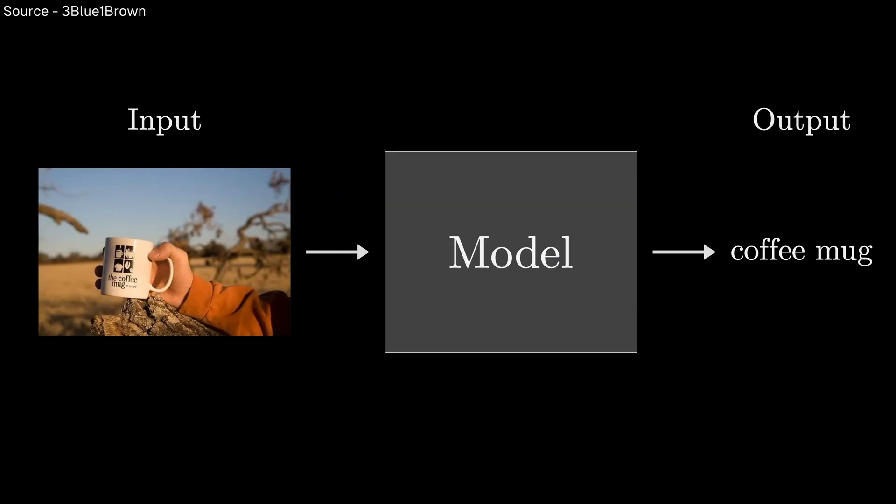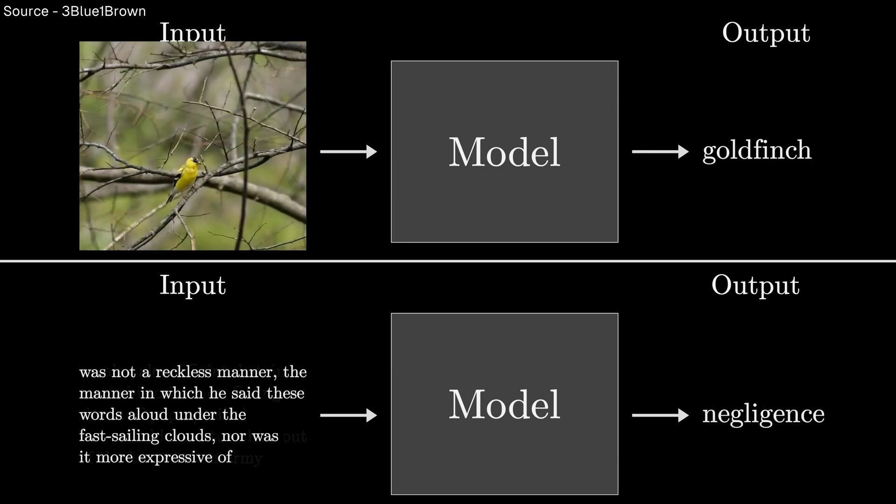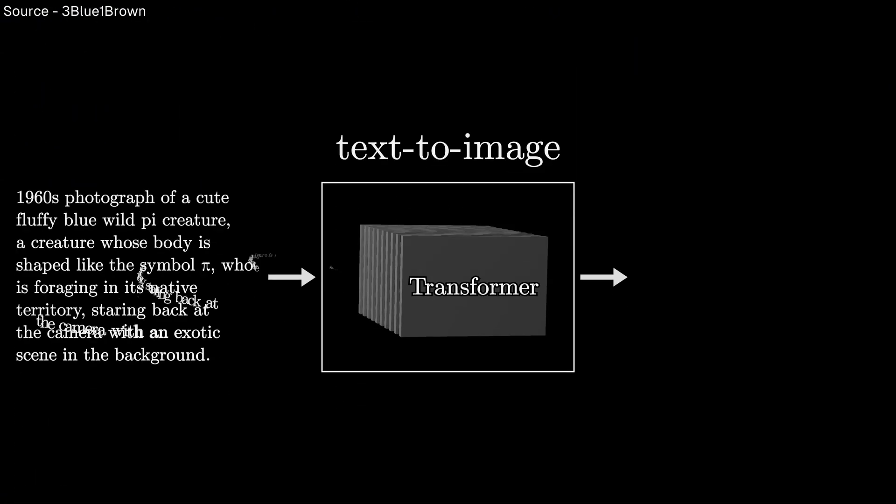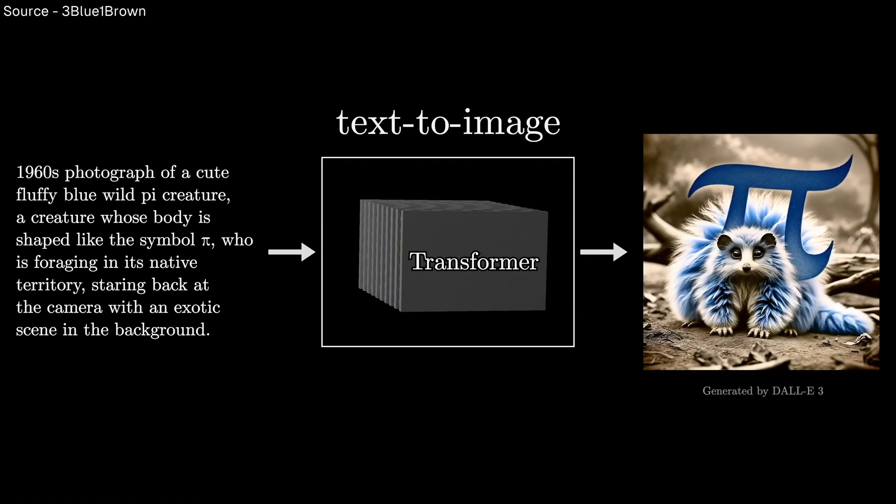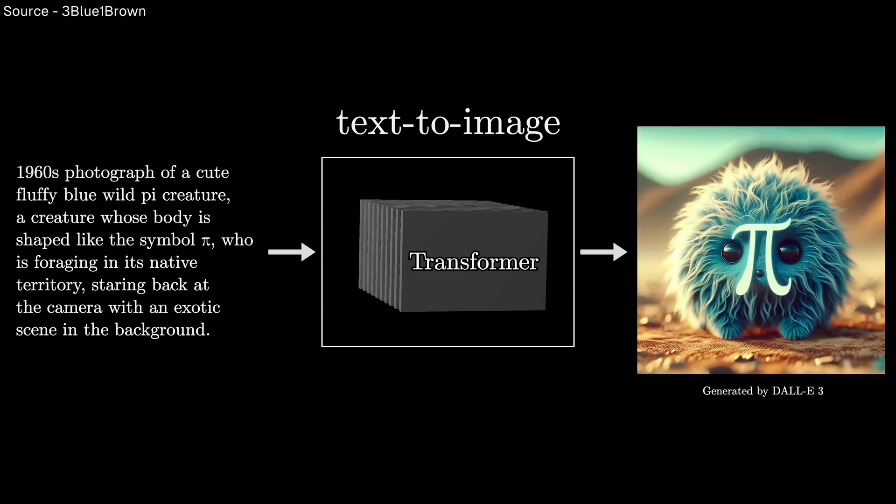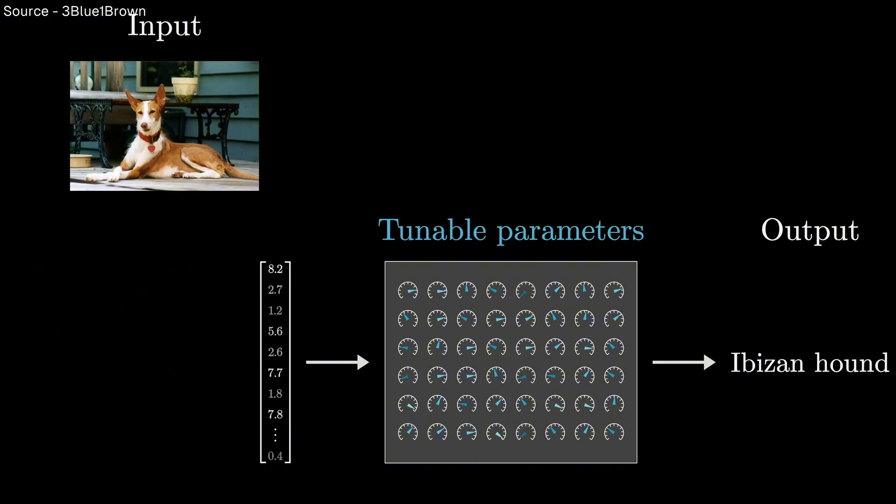Consider vision models. Small networks could recognize basic patterns. Larger ones could identify objects. Even larger ones could understand scenes and context. Now, the largest vision models can generate complex images from text descriptions, a capability that seemed magical just a few years ago. Each scale increase brought not just better performance, but qualitatively new abilities.